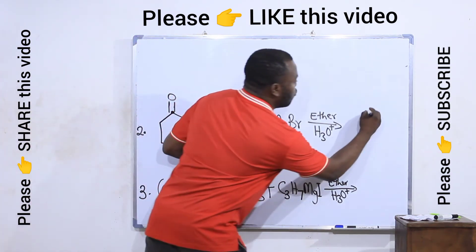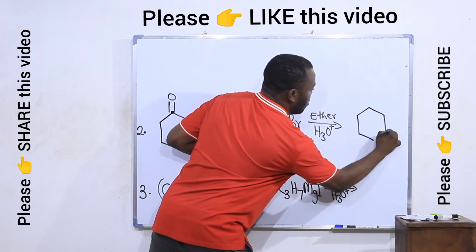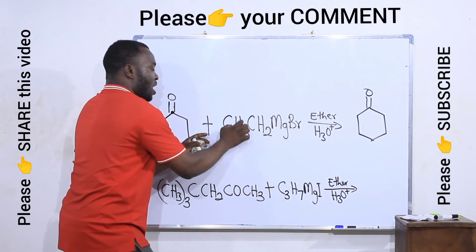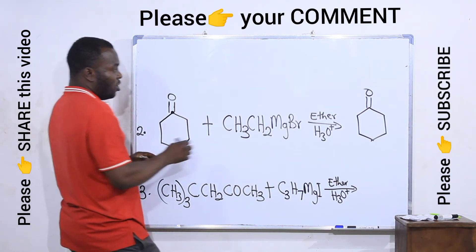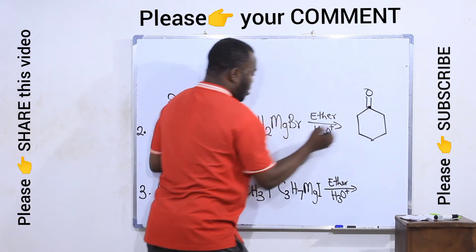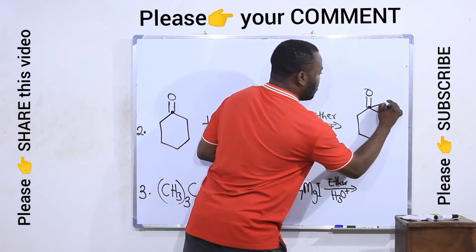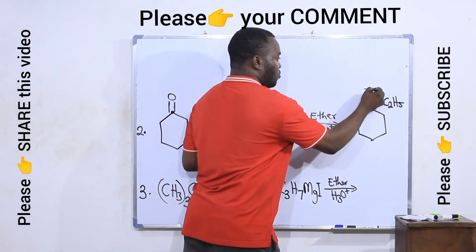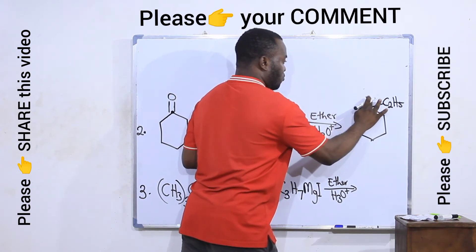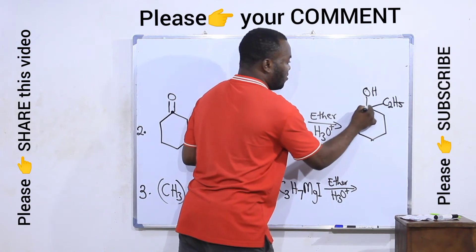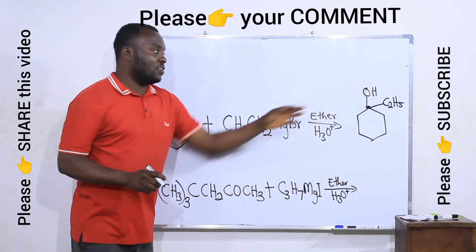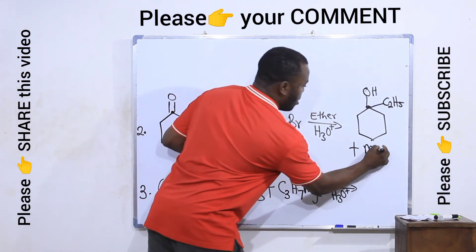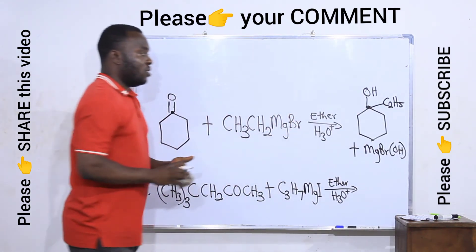Draw the cyclic ketone as usual. Then disconnect the alkyl group from the Grignard and bond it to the carbonyl functional group of the ketone — that is this carbon here. I attach C₂H₅ here. Then protonate the oxygen — add H to this oxygen — so it becomes OH; remember to remove one of the bonds to maintain four bonds around carbon. The product is the cyclic tertiary alcohol, plus MgBrOH.